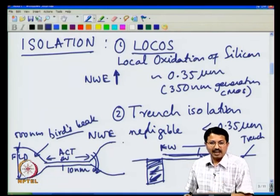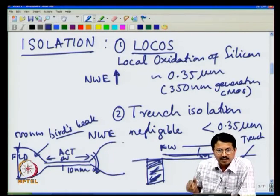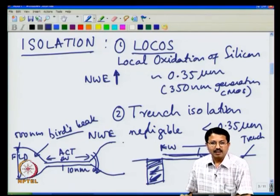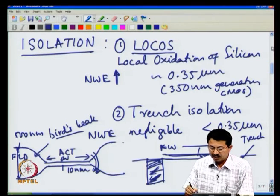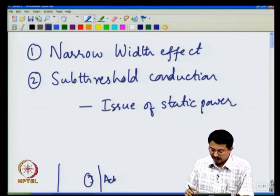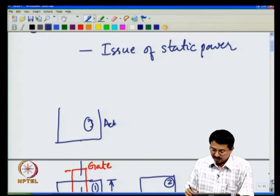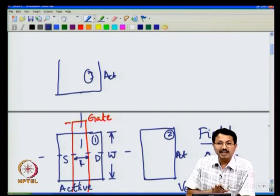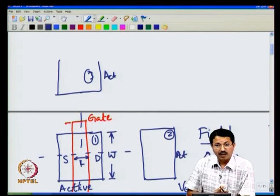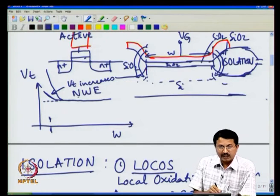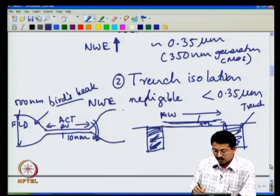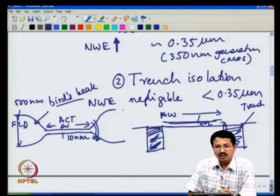That completes the first target for today's lecture — the narrow width effect. As we miniaturize the transistor width, fringing fields at the gate edges along the width direction cause the threshold voltage to increase. By moving to trench isolation from LOCOS, we have been able to minimize this narrow width effect.